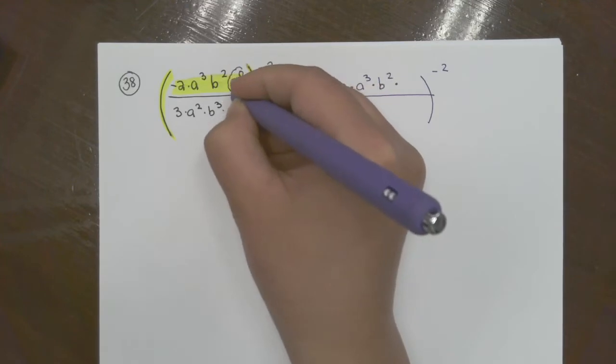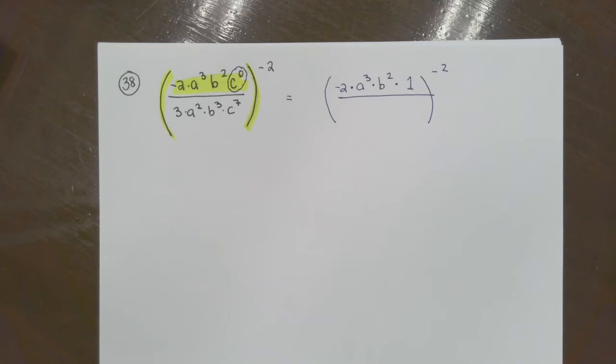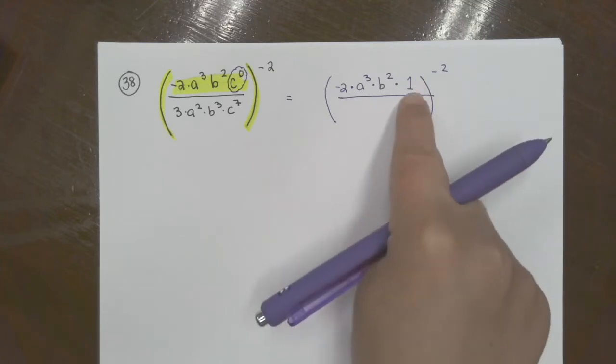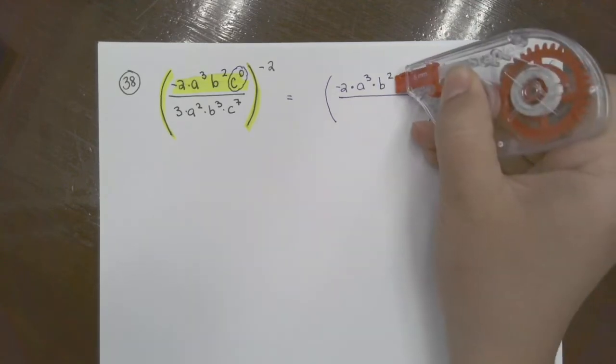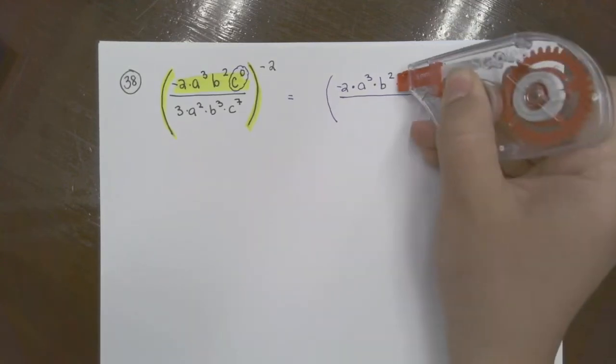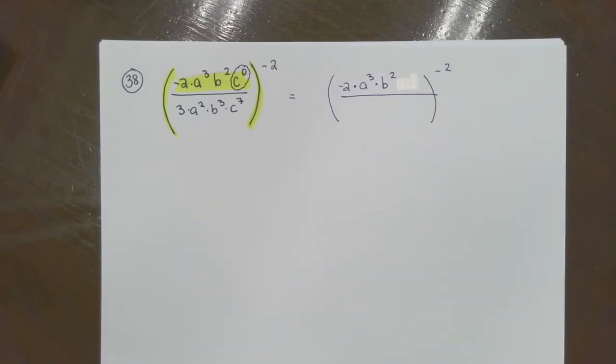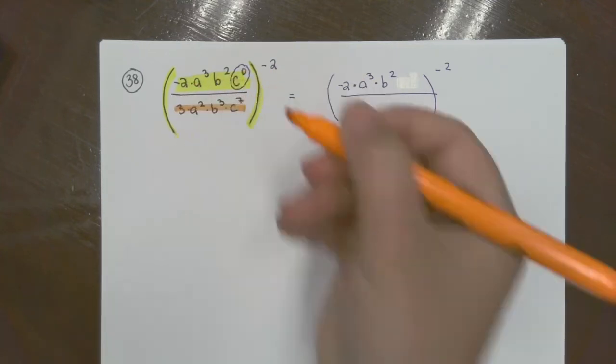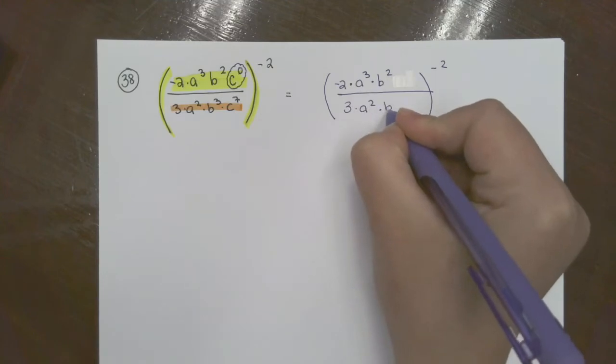I'm going to look on top and ask myself, is there anything there that I can simplify? We have a negative two here. What else do we have? We have a zero. What do we know? Anything to the zero power is one. We can't simplify. What is one times negative two? We don't really need this one because we're multiplying.